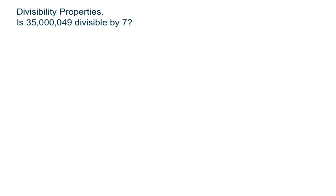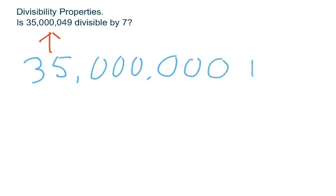I could take the number 35,000,049 and I could write it as a sum of two other numbers. I could say that that is equal to 35,000,000 plus 49. Now, what good does that do? Well, when you were looking in your book, you probably saw a really strange looking property.